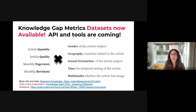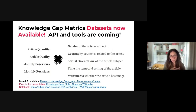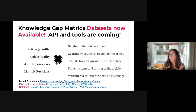This and much more data you can find in a recent dataset release from a few months ago. These Knowledge Gaps Metrics datasets are now available for you to explore. They contain metrics for five knowledge gaps: gender, geography, sexual orientation, time, and multimedia. For each of these gaps, you will find data about overall article quantity, quality of articles, page views, and revisions. This data is available at the link below, and we will make sure the link is included in a meta page attached to the comments for this video.